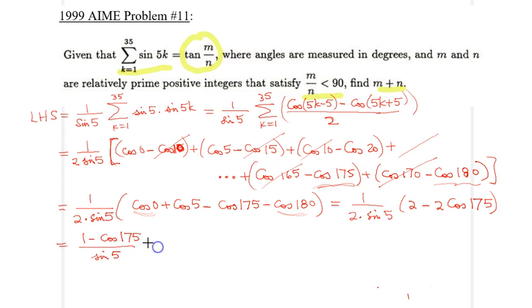But then, as a final step, I will just replace that sine of 5 with sine of 175 for a good reason. Because I remember that this is just the half-angle formula for the tangent. So, that whole thing is just equal to tangent 175 degrees over 2.